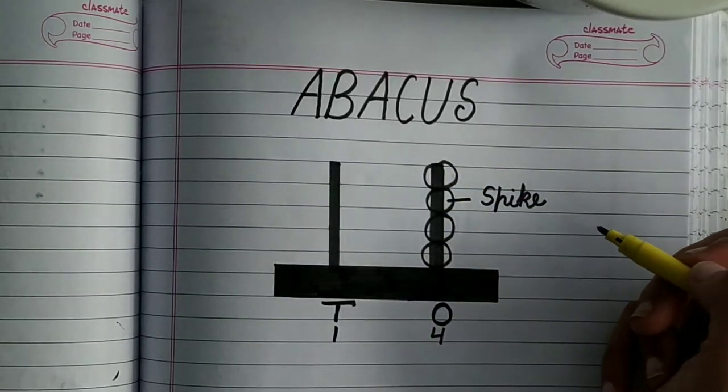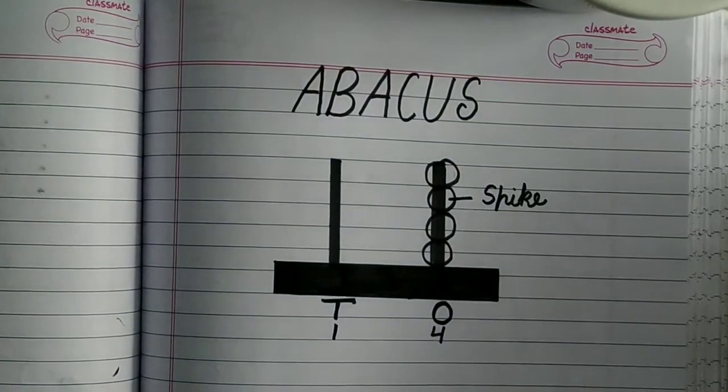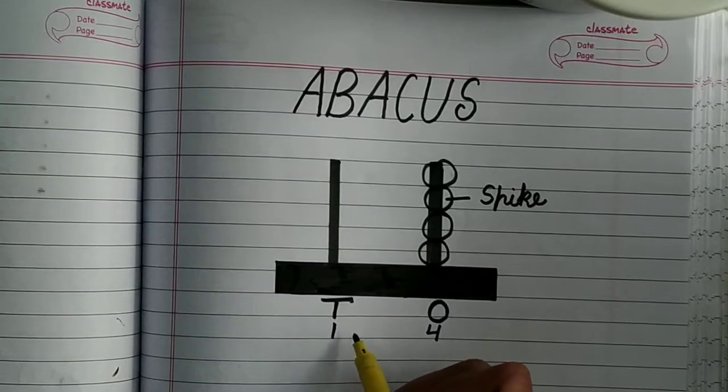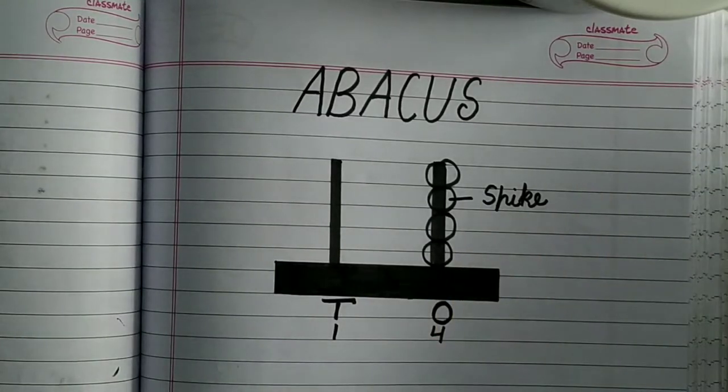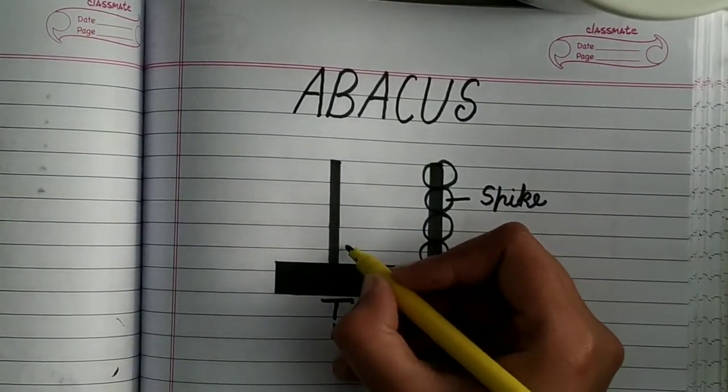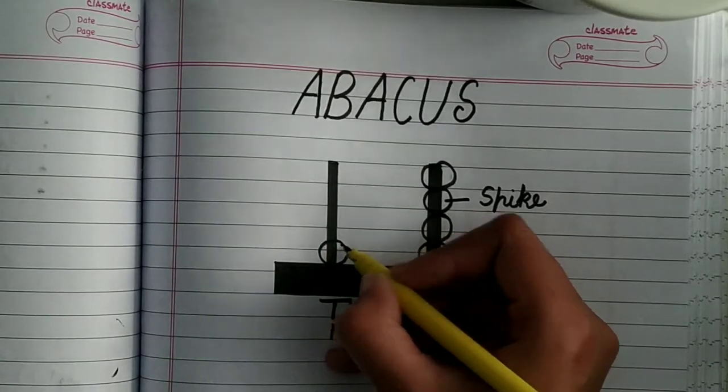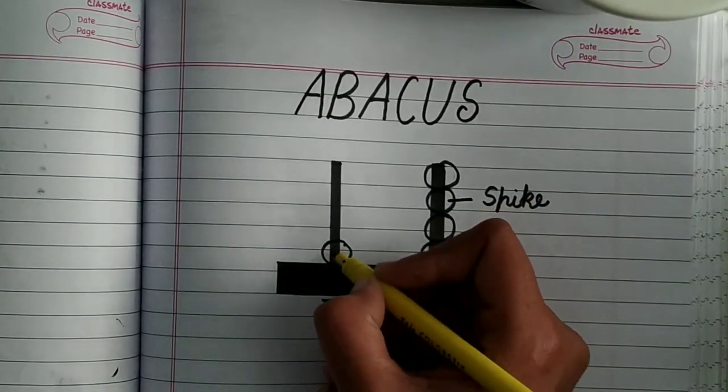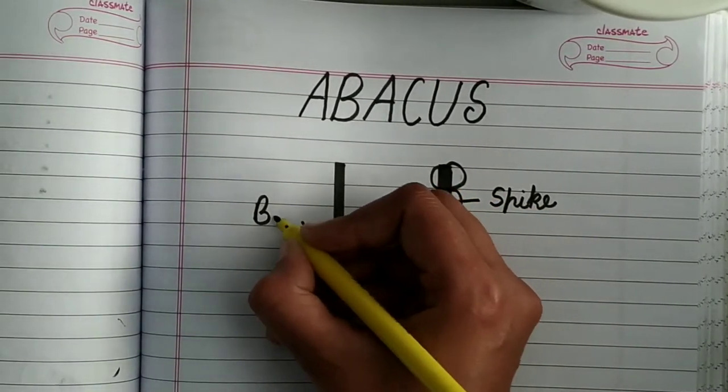Right? And here at one place, there is one. That means there is one tens. So I will make one bead. So this rod is known as spike and this circle is known as bead.